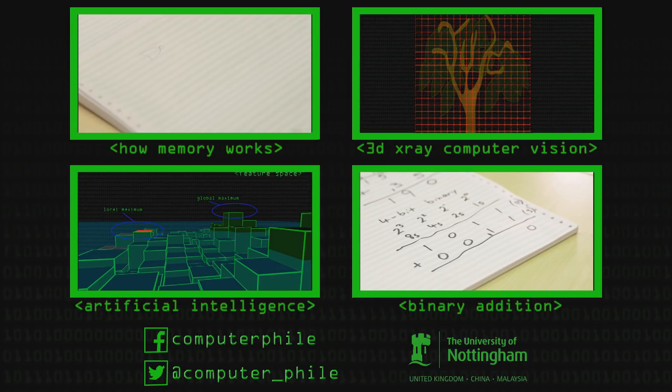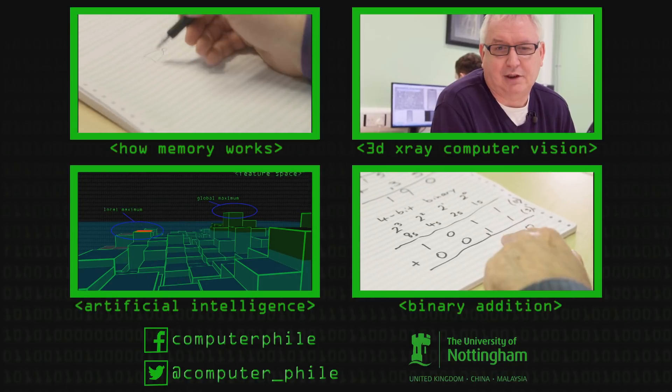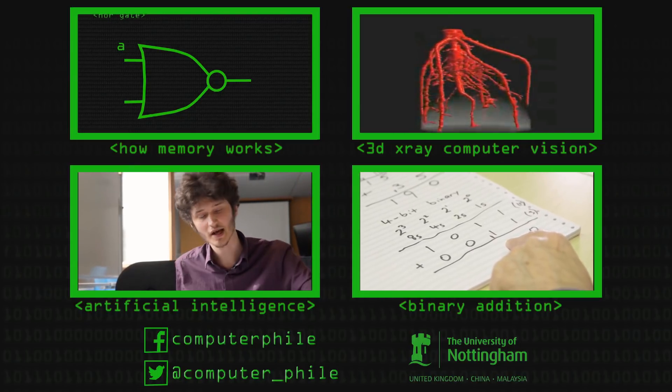It'll be useful to refresh our memory of how a NOR gate works. So that's our NOR gate, and it has two inputs, which we'll label as A and B.